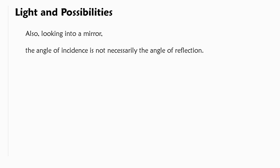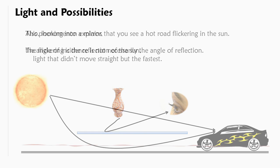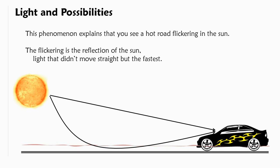Also looking into a mirror the angle of incidence isn't necessarily the angle of reflection. It can be but it doesn't have to be and it could look like this. This phenomenon explains that you see like the hot flickering road in the sun and this flickering is the reflection of the sun light that didn't move straight but the fastest.